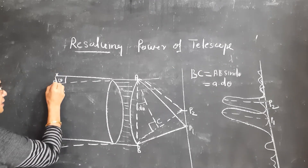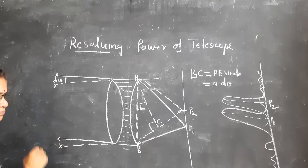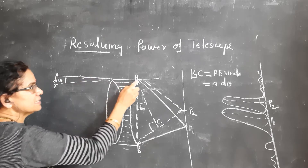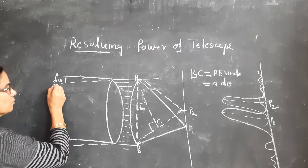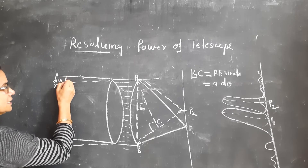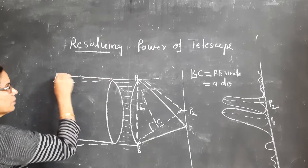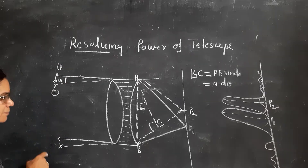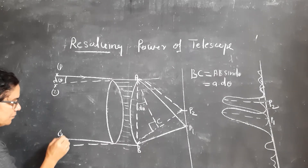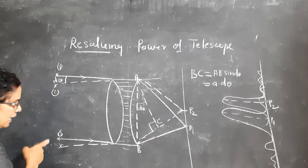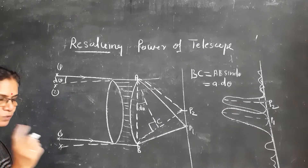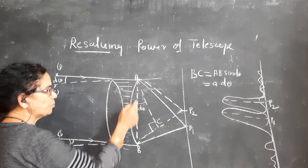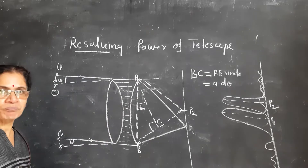Suppose this is one object and here is another object. A ray comes from one object and is incident at point A. The other ray coming from the other object makes an angle dθ with the direction of the ray coming from the first object. The ray from the first object is incident at one point and the ray from the second object — many rays are coming — makes an angle dθ and is incident at point B. This is the telescope objective, where diffraction takes place.